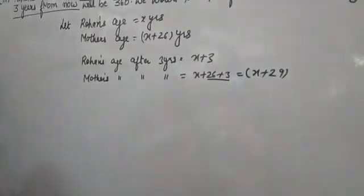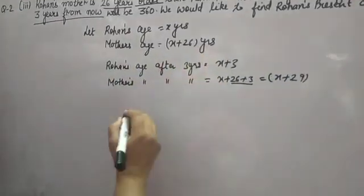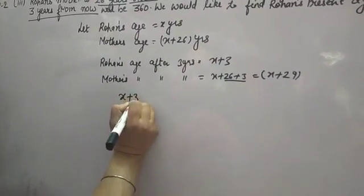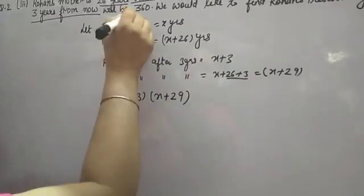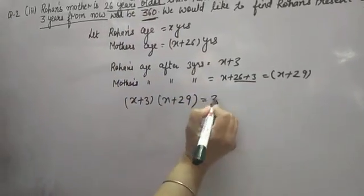26 plus 3 is 29. Their product, product means multiplication, means X plus 3 into X plus 29 is given as 360, equal to 360.